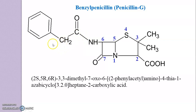So, 6-(2-phenylacetyl)amino, 4-thia-1-azabicyclo[3.2.0]heptane-2-carboxylic acid. So, this is the IUPAC name for benzyl penicillin. Here, there is the involvement of a bicyclic heterocyclic ring system. Thus, we have given the name accordingly, placing this in bracket 3.2.0.